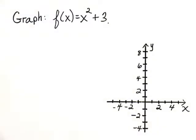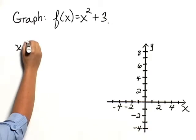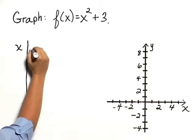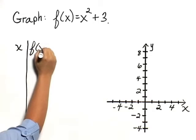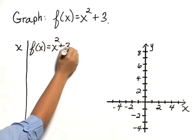Graph f of x equals x squared plus 3. In order to graph this function, we'll find some points that would be on the graph. So we'll make a chart, and we'll have values of x and the corresponding values of f of x, which equals x squared plus 3.